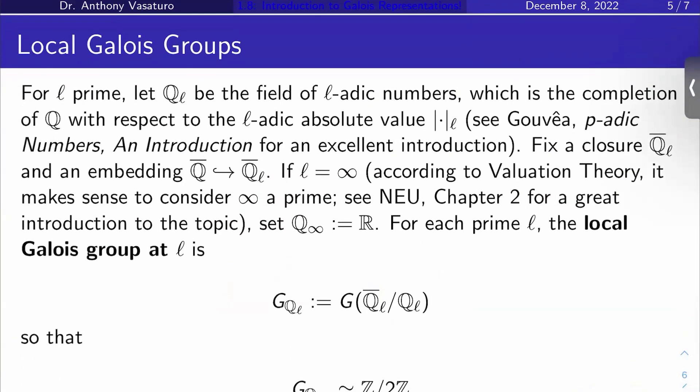How about local Galois groups? So let's let ℓ be a prime and let's let Q_ℓ be the field of ℓ-adic numbers, which is the completion of Q with respect to the ℓ-adic absolute value |·|_ℓ.